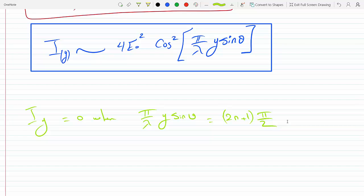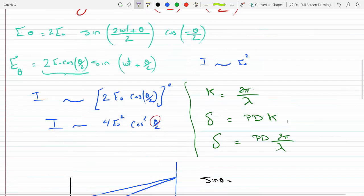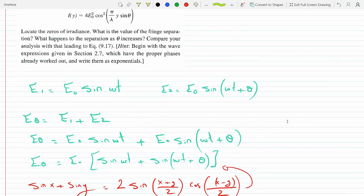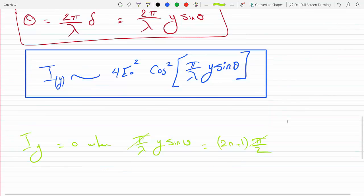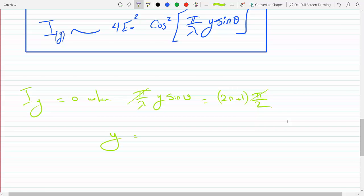And I wasn't sure about this because there are some figures where y is the separation distance on the screen. Here they say the fringe separation. Okay, so they're referring to, so I was calling my y, d. Okay, I get that. So the fringe separation is y. So if we solve for y, we will get y equal 2n plus 1 over 2, times lambda over sine theta.